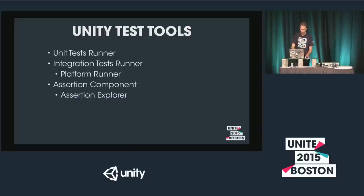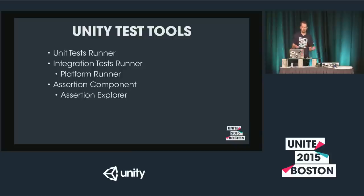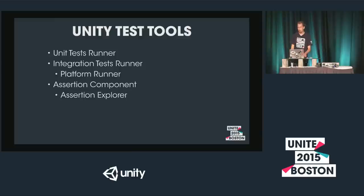The Unity Test Tools package, which many of you have heard of, is currently an Asset Store package. It consists of three main components: the Unit Test Runner for writing low-level tests, the Integration Test Runner for writing scene-based tests, and the Assertion Component for setting up assertions visually. I'll show you how they work in practice shortly.